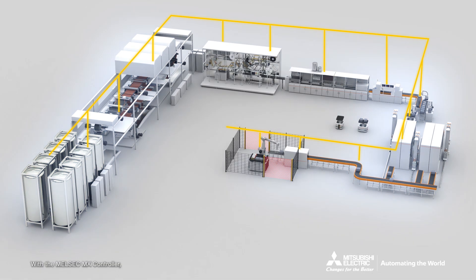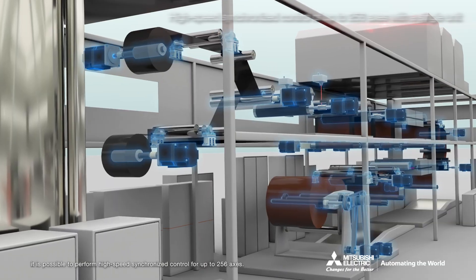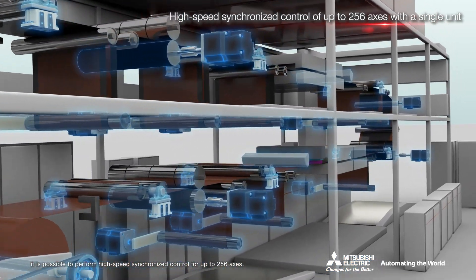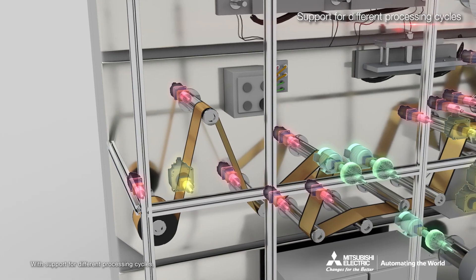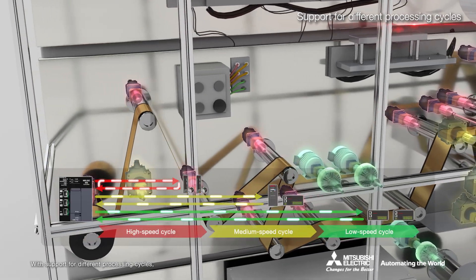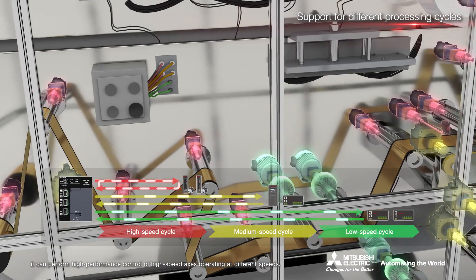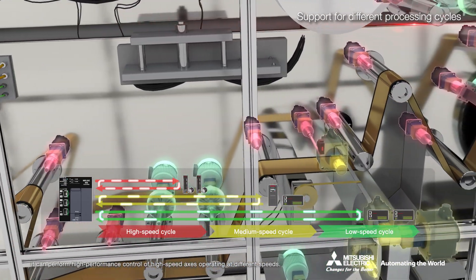With the MELSEC MX controller, it is possible to perform high speed synchronized control for up to 256 axes. With support for different processing cycles, it can perform high performance control of high speed axes operating at different speeds.